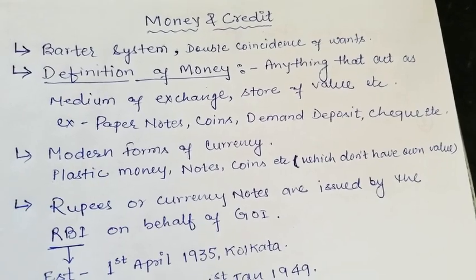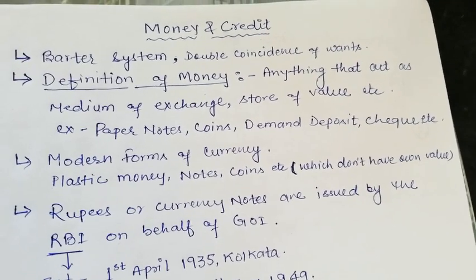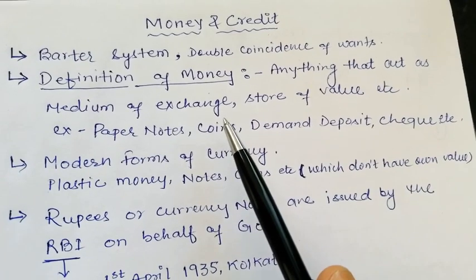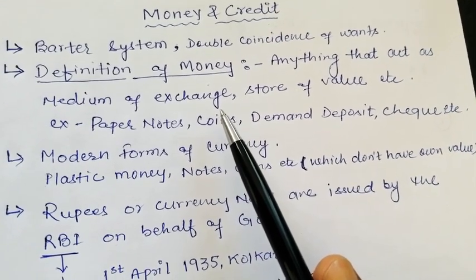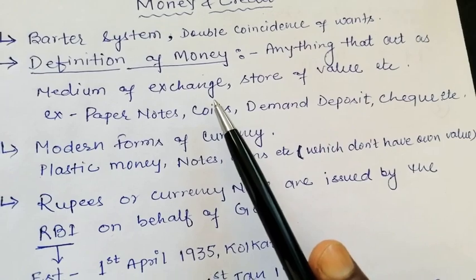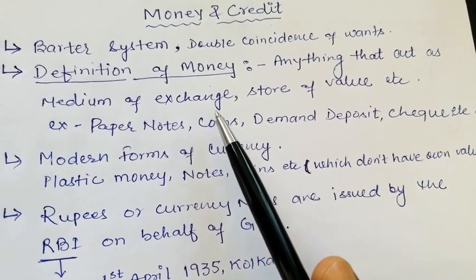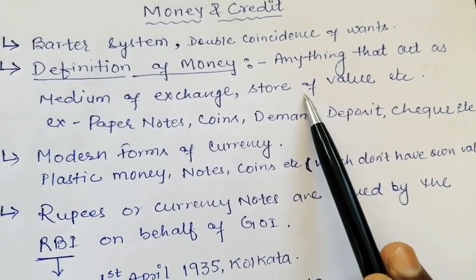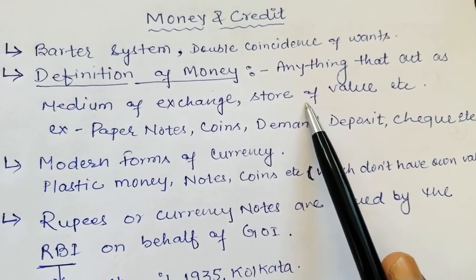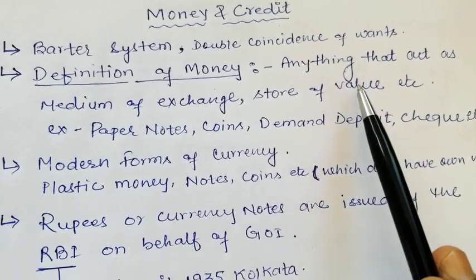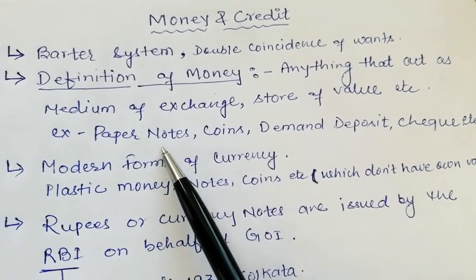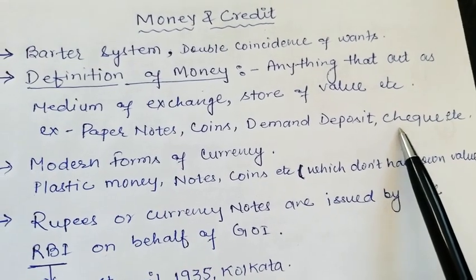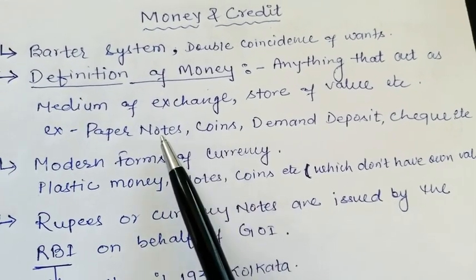That was the situation, dear students. Now, what is the definition of money? Anything that acts as a medium of exchange — any thing which has the characteristics of a medium of exchange or has a storage value, like rupees, currency, notes — is known as money. For example, paper notes, coins, demand deposits, and cheques are basically forms of money.